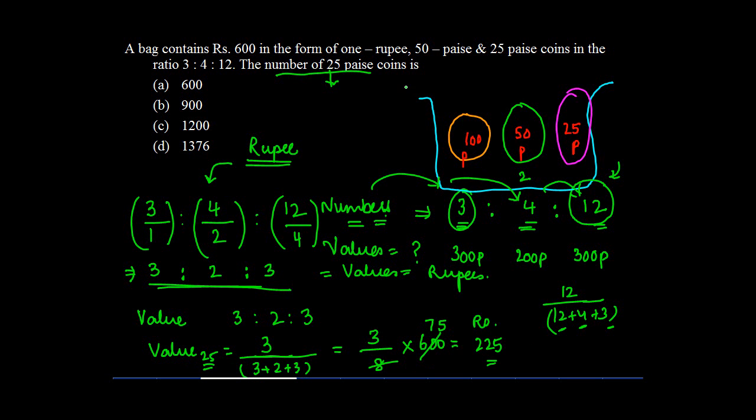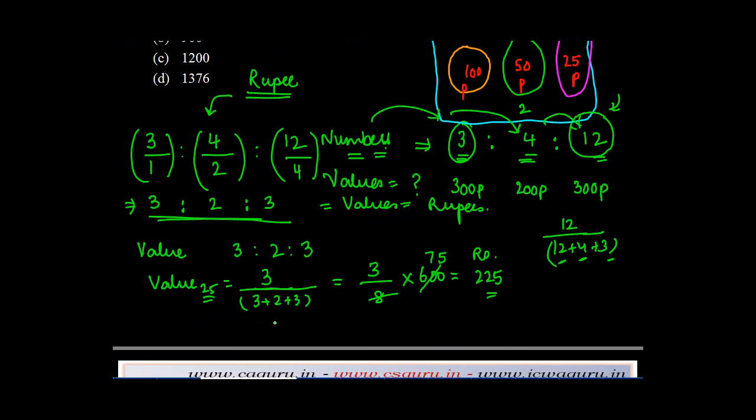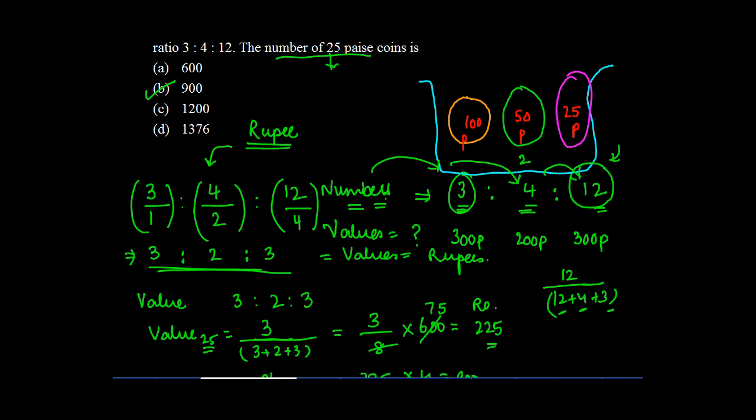What is the question asking you? The question is asking you the number of 25 paise coin. So the number is how much? If it is 225 rupees value. In 1 rupee, how many 25 paise coin are there? There are 4 coins. So into 4. 900. And that is going to be your answer.